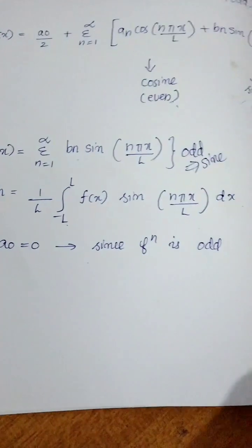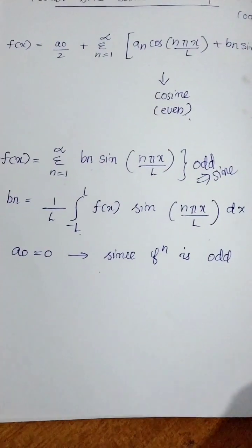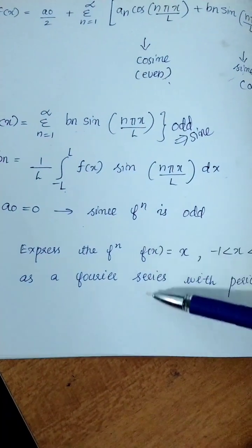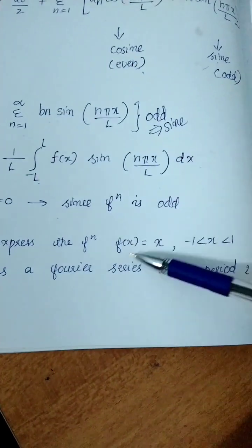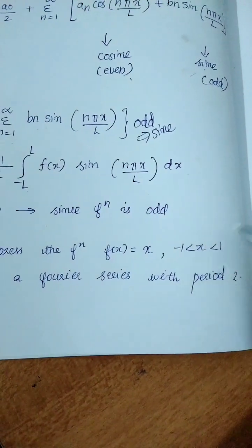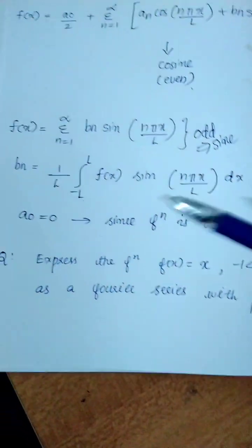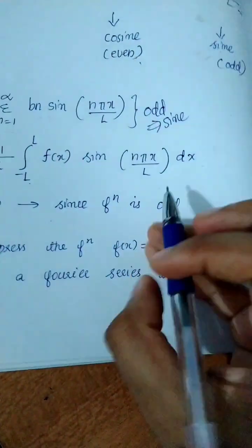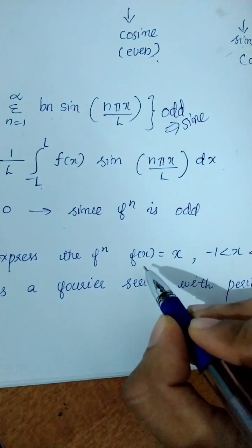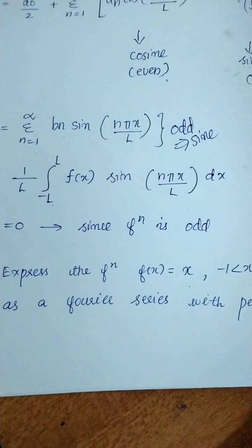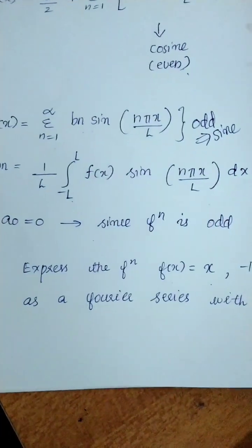Now let us look at the odd function question. The question is: express the function f of x equal to x, for minus 1 less than x less than 1, as a Fourier series with period 2. The function f of x equal to x is the odd one.